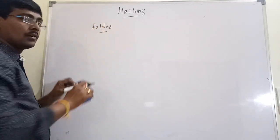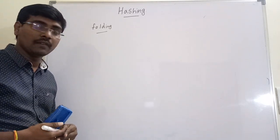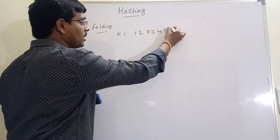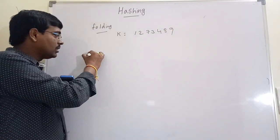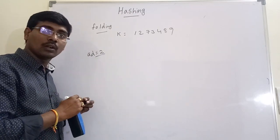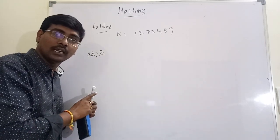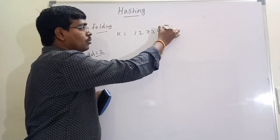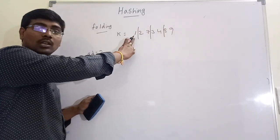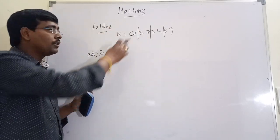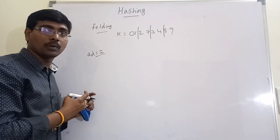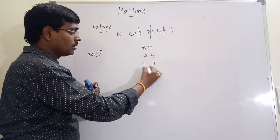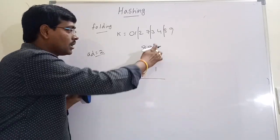The last method is the folding method. In the folding method, the key is divided into a fixed number of digits. For example, if k = 1273489 and the key address width is 2 — address width 2 means the size of the table is only up to 99, address width 3 means up to 999. The key is divided into equal parts of size 2: 89, 34, 27, 01.